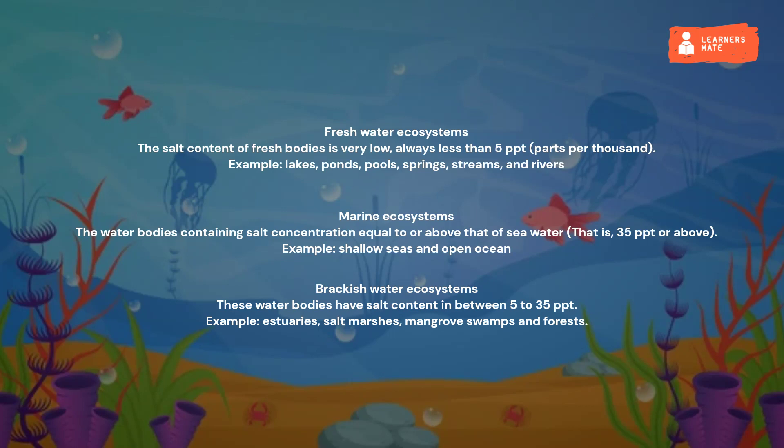Brackish water ecosystems: these water bodies have salt content in between 5 to 35 ppt. Examples include estuaries, salt marshes, mangrove swamps and forests.